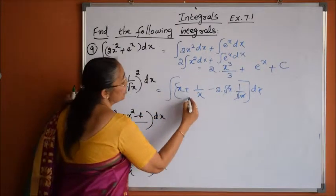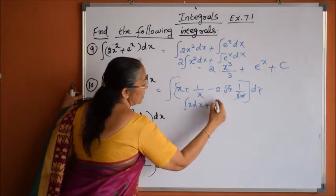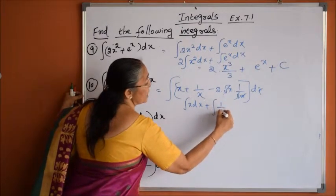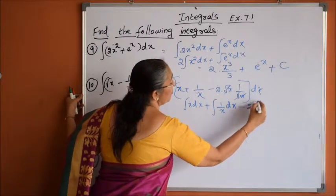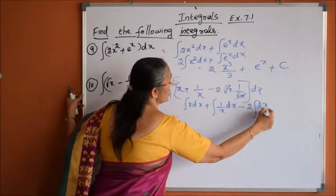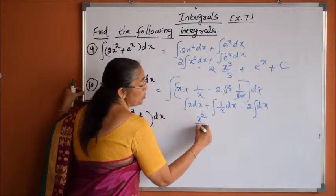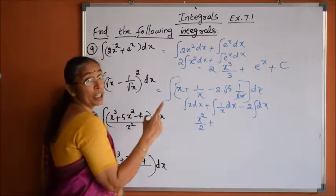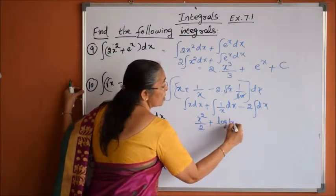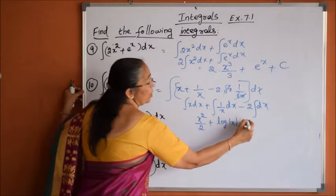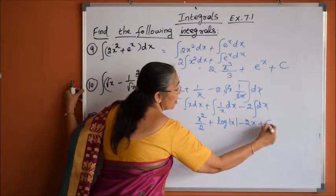Now we find the integration of this function: integration of x dx plus integration of 1/x dx minus 2 times integration of dx. Integration of x dx is x²/2. Integration of 1/x dx is log|x|. Minus 2 times integration of dx is 2x, plus constant c.